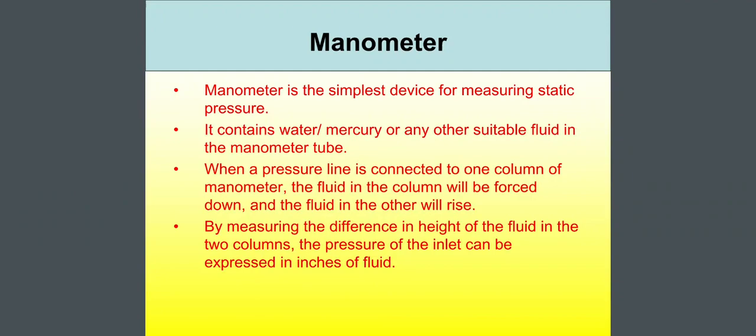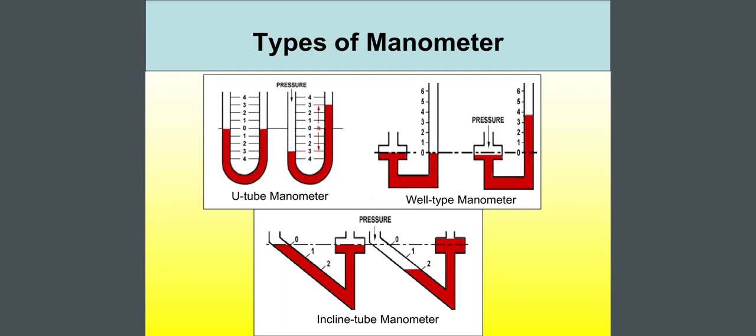Manometer. Manometer is the simplest device for measuring static pressure. It contains water or mercury or any other suitable fluid in the manometer tube. When a pressure line is connected to one column of manometer, the fluid in the column will be forced down and the fluid in the other will rise. By measuring the difference in height of the fluid in the two columns, the pressure of the inlet can be expressed in inches of fluid. Look at the figures. There are different types of manometer. The first one is U tube manometer. Look at this. These are the shape of U. Next one, well type manometer. And the last one is inclined tube manometer. So, these are the three types of manometer.